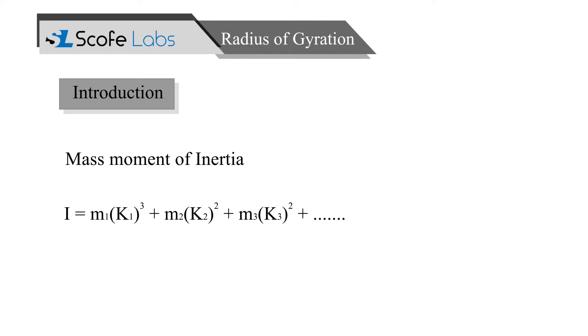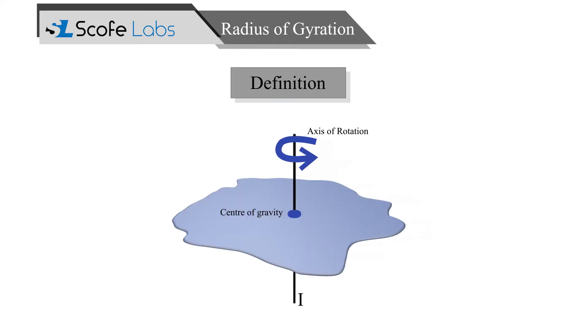We know the concept of mass moment of inertia of the body. Let us discuss about radius of gyration. It is defined as the distance from axis of rotation where the whole mass of body is assumed to be concentrated to give the same value of moment of inertia.